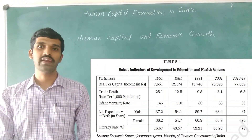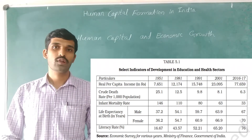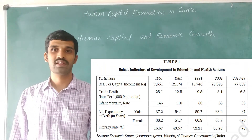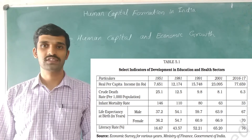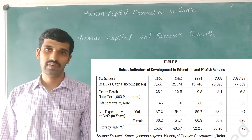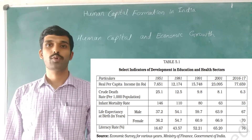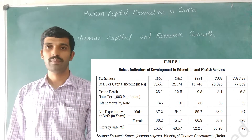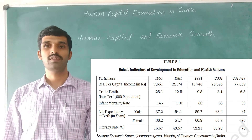In this table you can observe the indicators of development in health and education. The indicators are: per capita income, crude death rate per 1000 people, infant mortality rate, life expectancy, and literacy rate. From 1951 to 2016-17, real per capita income increased from about 5,708 to 77,654.